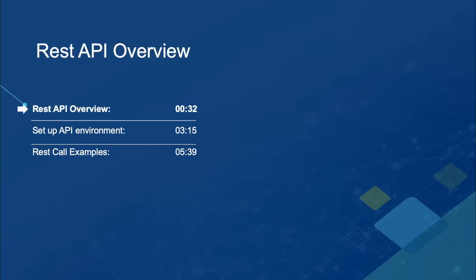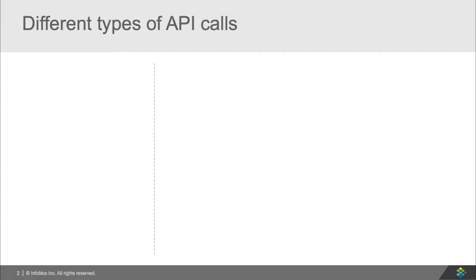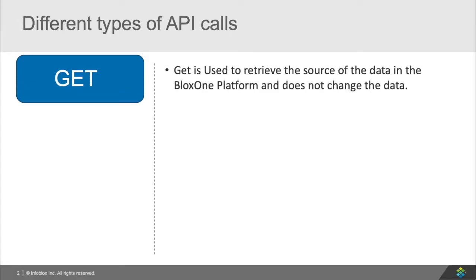So first, let's look at a high-level overview. Here, we have a couple of different REST API calls that we can make. The GET call allows you to retrieve the source of the data from the platform and does not change the data itself. This way, you can read the data and see what's going on safely.